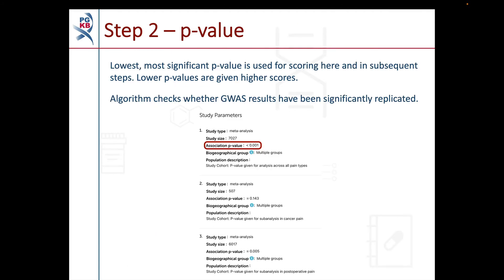Step 2 assesses any reported p-values included in the study parameters of the variant annotation. Lower, more significant p-values score more in this step. For variant annotations with multiple p-values, the lowest p-value is used for scoring, and the set of study parameters containing that p-value are used for scoring in subsequent steps. Variant annotations from GWAS studies are checked for both a discovery and replication cohort and scored for successful replication of the reported association.